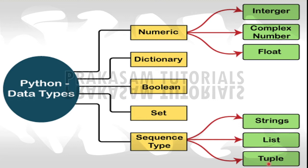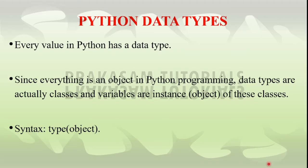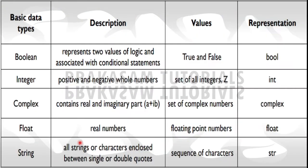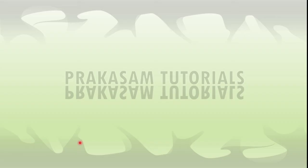The type() function is used to determine the type of a data type. The syntax of the type function is type(object), where the object can be a variable, any data structure, or any array.